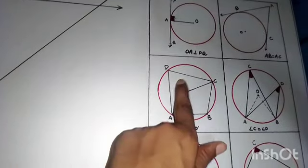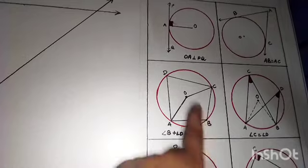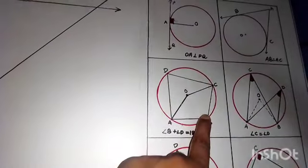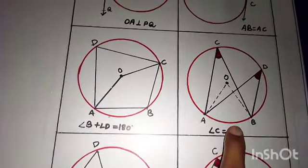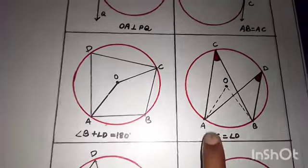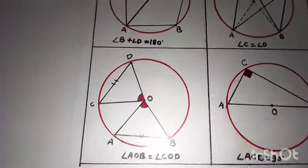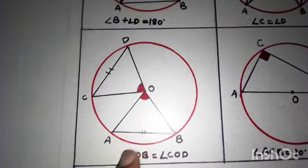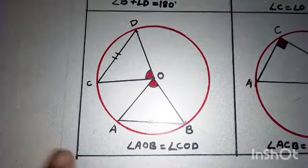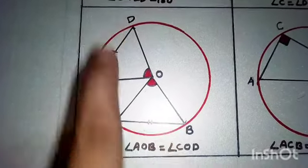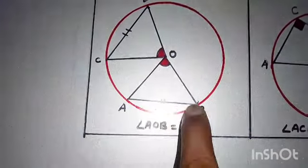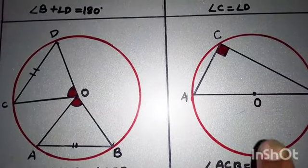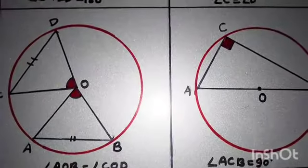Here, cyclic quadrilateral — it has both opposite angles summing, the sum of opposite angles is 180 degrees. And here is one theorem which is: angles in the same segment are equal. Here is one theorem which is: if chord AB equals chord CD, then the angle made by this chord on the center would be equal — means angle AOB is equal to angle COD. Here it is one theorem: the triangle in the semicircle is always a right angle.